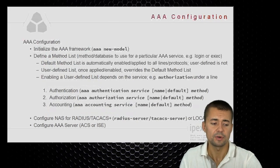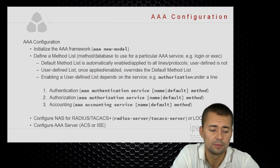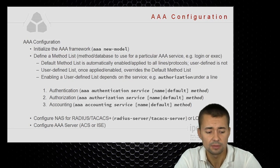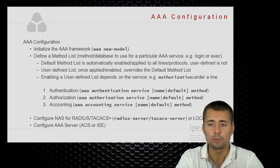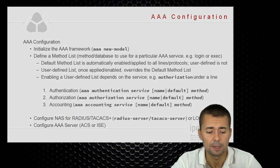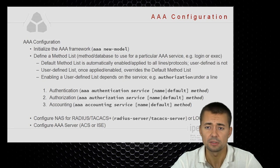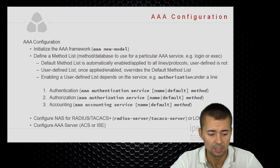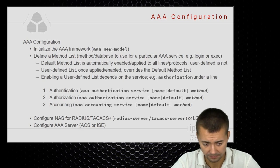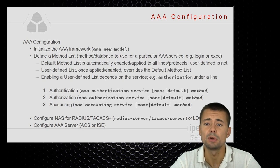Let's talk about configuration for AAA, starting with the method list and the authentication function. Before we access the configuration commands for AAA, we will have to enable the framework using the AAA new-model command issued globally, and then we will need to define a method list for the particular AAA function we want to use.